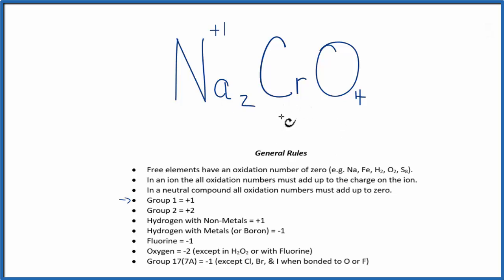We don't know the chromium, but oxygen almost always is minus 2 with just these exceptions here. So we have minus 2, that's the oxidation number on each of these four oxygens. So we can use this rule here as well to help us.